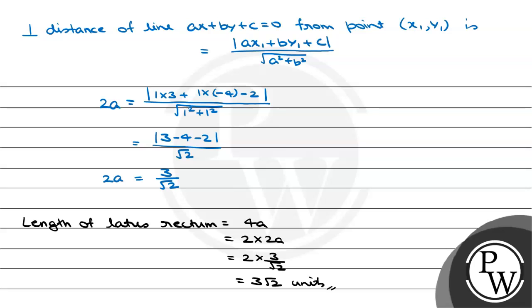So, the length of the latus rectum is 3 root 2 units. The final answer for this question is 3 root 2 units. I hope everyone has understood it well. Thank you, best of luck.